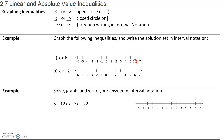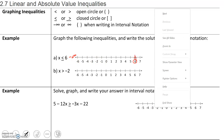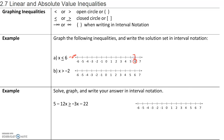Next, we determine whether our solution set is going to approach negative infinity or positive infinity. Since we want numbers that are less than or equal to 6 — like 5, 4, 3, 2, 1 — the numbers will get smaller and smaller and approach negative infinity. So our solution set is the set of all numbers from negative infinity to positive 6, including 6.